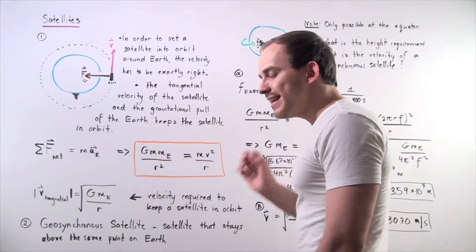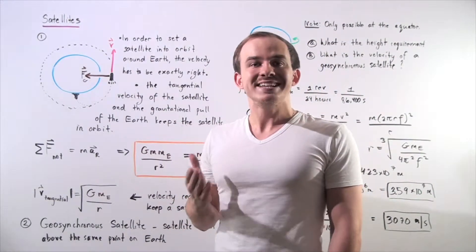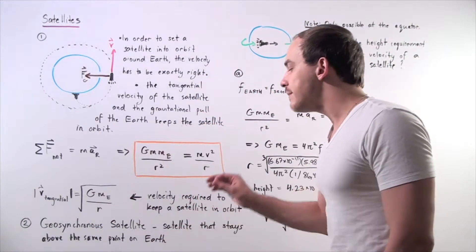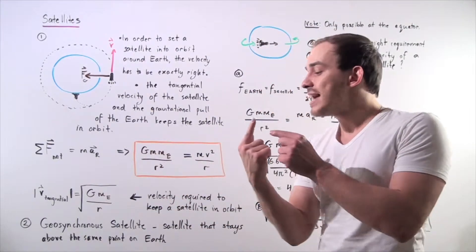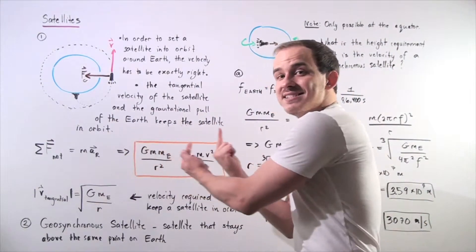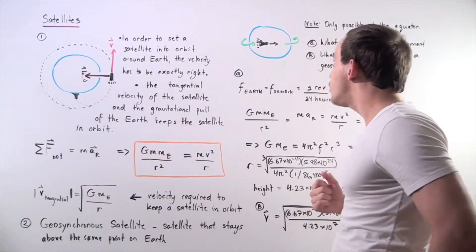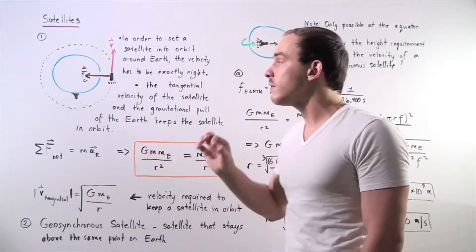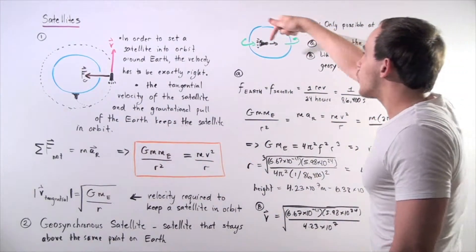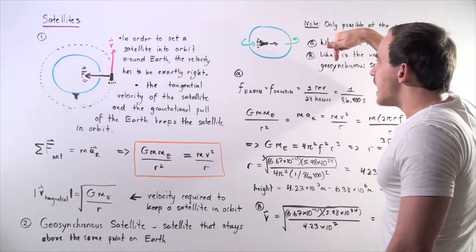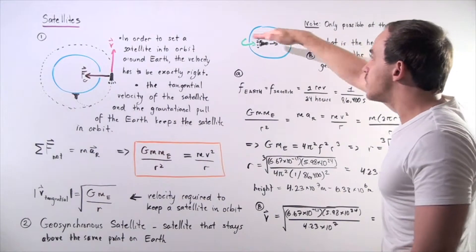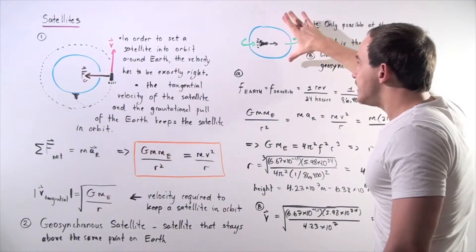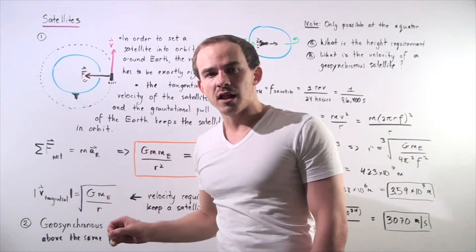What exactly is a geosynchronous satellite? A geosynchronous satellite is a satellite that stays above the same exact point on the Earth. As the Earth rotates, the satellite rotates at the same exact rotational frequency. This is only possible if the satellite is directly above the equator of the Earth.